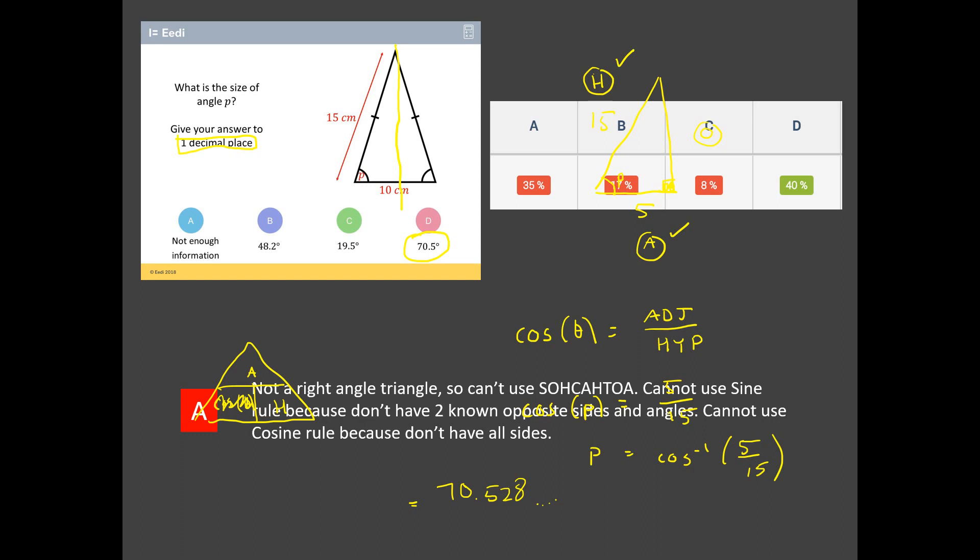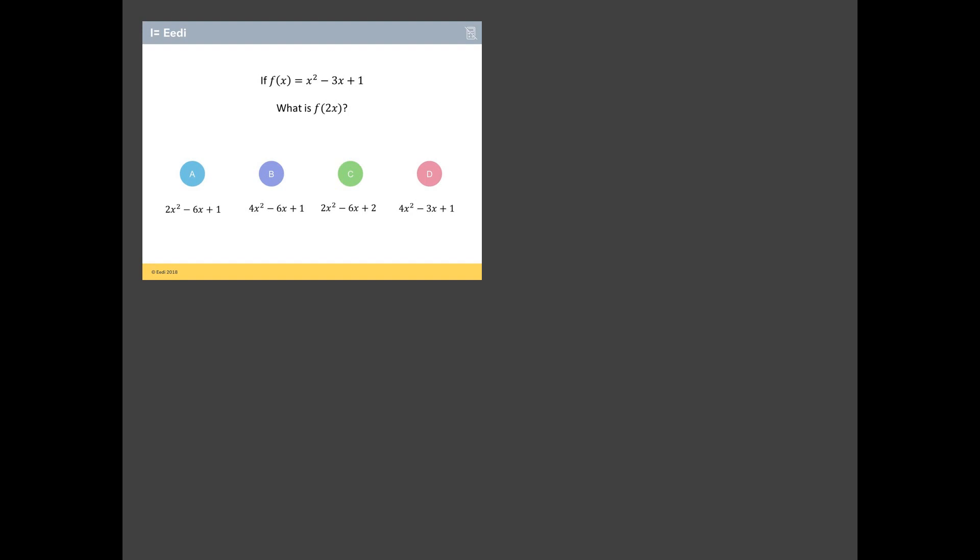The worst answered one is this one. Now if you've been following this Beat the Nation series, it will be no surprise to you. We've seen functions crop up before and cause problems. What's going on here? So if f of x equals, let me write this down, we have x squared minus 3x plus 1. And what we want is we want f of 2x. Now what that tells us to do is every time we have an x in our original, we want to replace it with a 2x. But we've got to be super careful about our brackets.